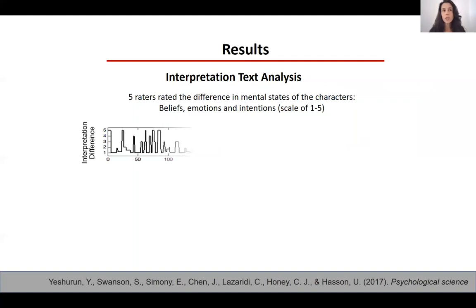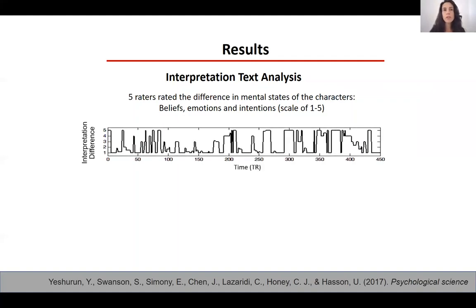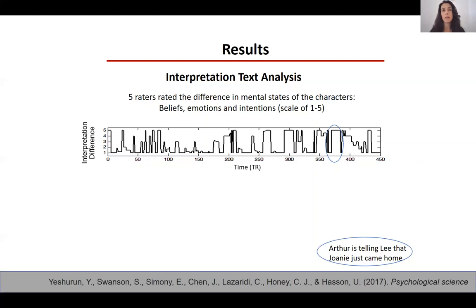The y-axis shows interpretation difference and the x-axis is time. There was large variability and difference in interpretation across the whole story. For example, in one region where raters indicated a large difference between the cheating and paranoia context, this corresponds to a time interval where Arthur tells Lee that Joanie just came home. Participants in the cheating context would say he is lying to save face, whereas those in the paranoia context would feel that everything returned to normal.